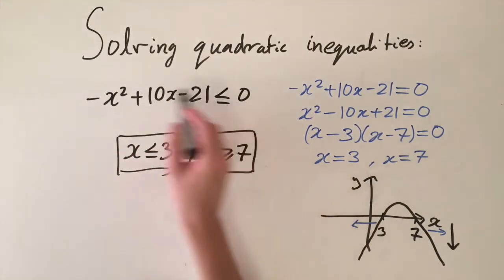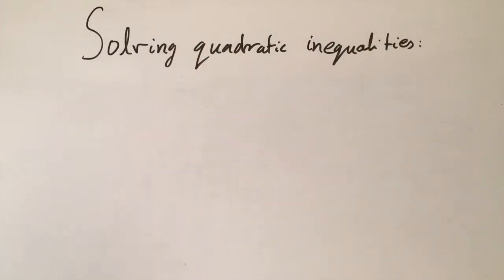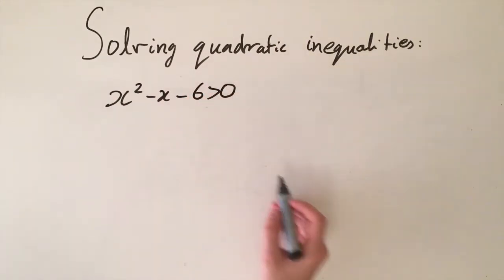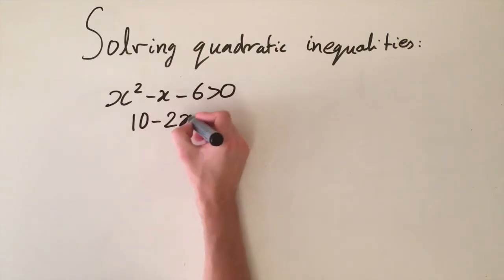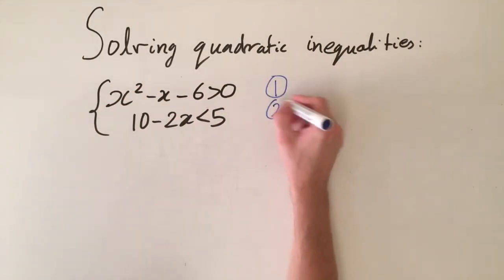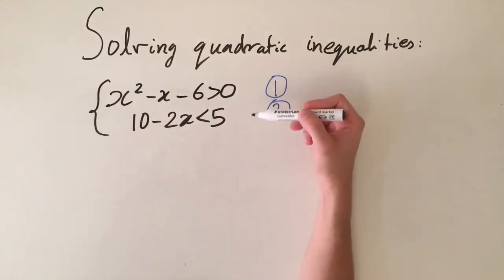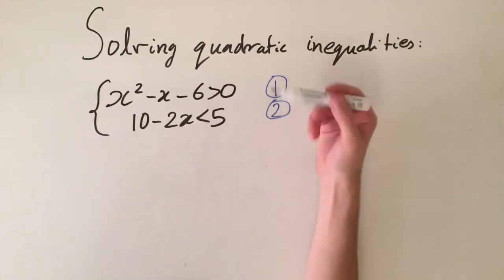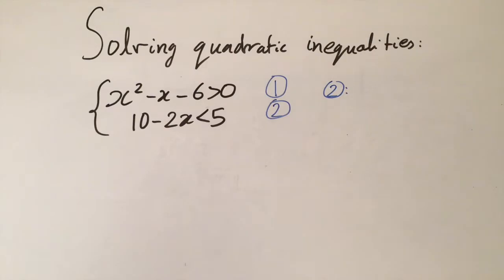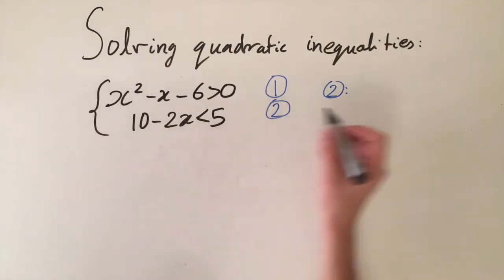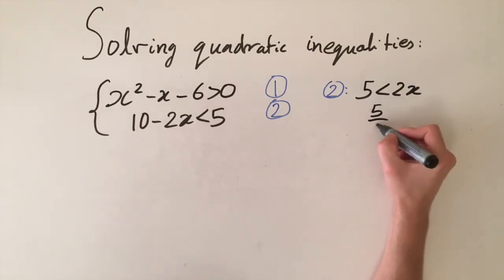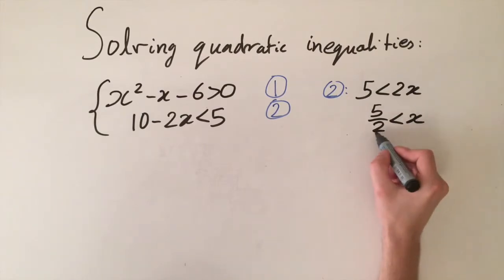I want to do one final example. This time we're going to solve a quadratic inequality and a linear one simultaneously: x squared minus x minus six is greater than zero, and ten minus two x is less than five. We label these inequality one and inequality two. We solve each one independently and then consider the values of x that satisfy both solutions. Starting with the easy one — the linear inequality — we move two x to the right and five to the left, getting five is less than two x. Dividing by two gives five over two is less than x. So x is greater than two-point-five is the solution to the second inequality.